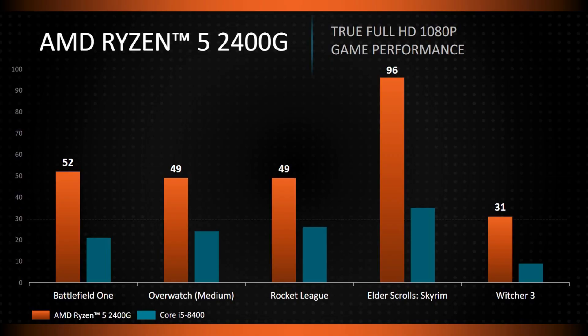Those two budget processors are the Ryzen 3 2200G and Ryzen 5 2400G. In these two processors, there is built-in Ryzen Vega graphics — the 2200G has Vega 8 and the 2400G has Vega 11. So for gaming without a dedicated graphics card, these two processors perform better than Intel's integrated graphics.